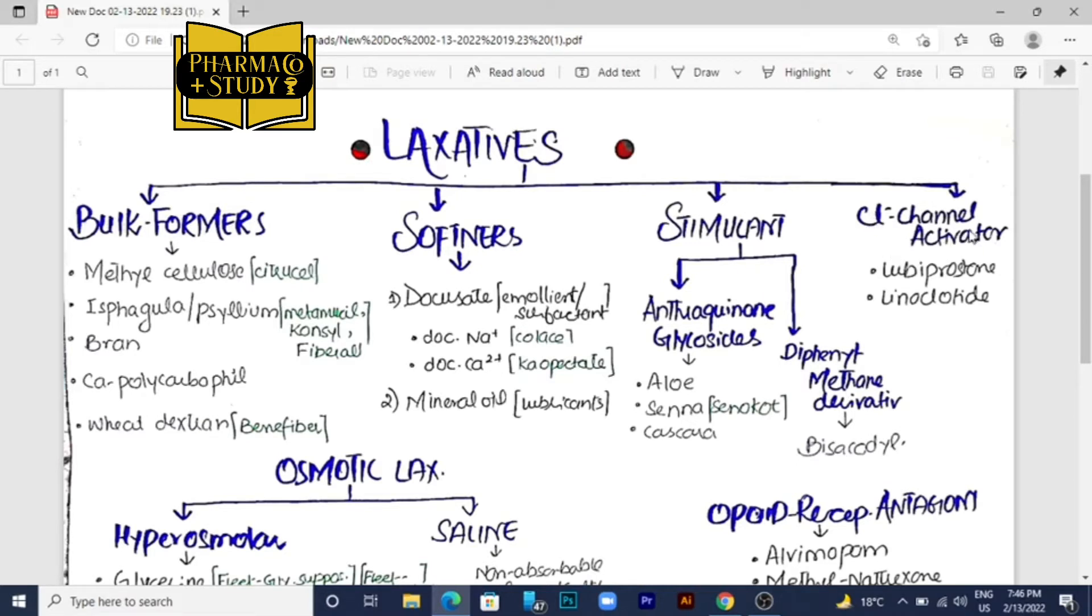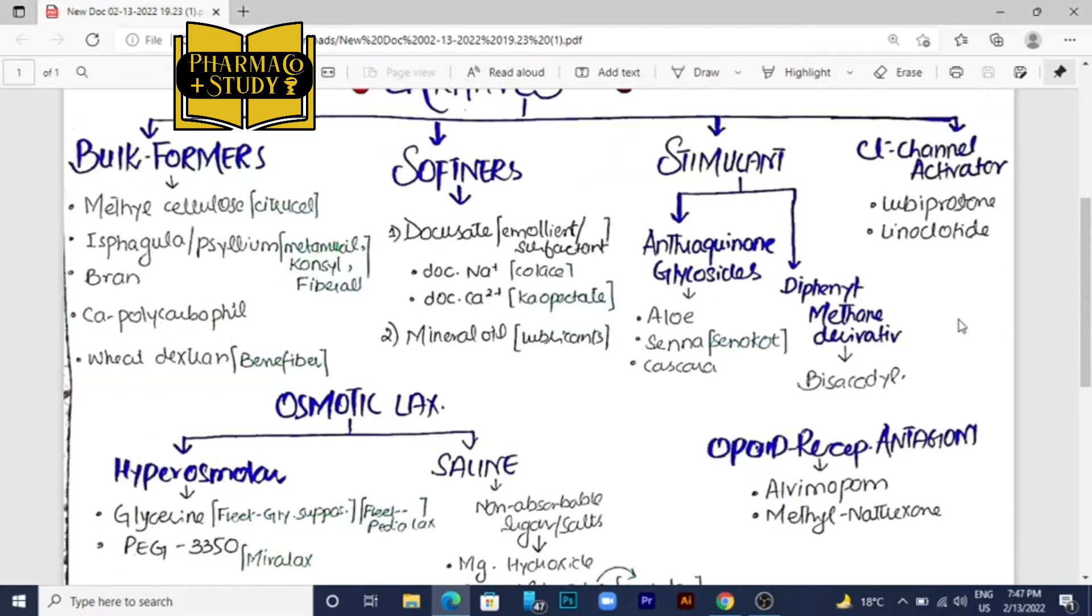Now the other class is the chloride channel activator. As I have discussed in the diuretic lectures, water follows the electrolytes. When the chloride channel is activated, it will release in the colon and the water will move in the colon, so by this way the stool gets softened and can easily pass through the intestine.